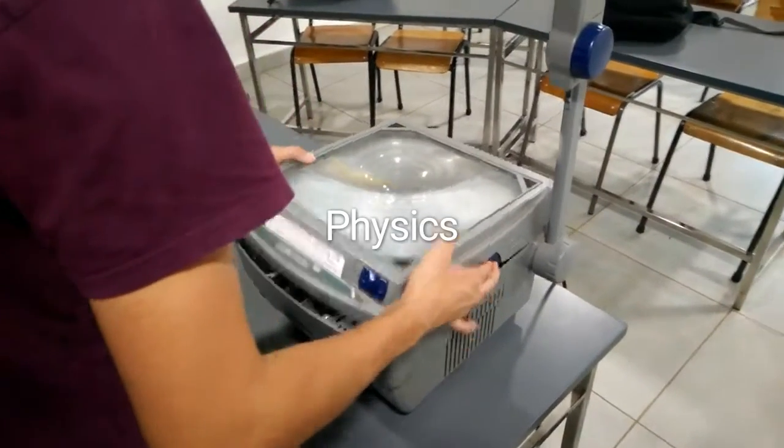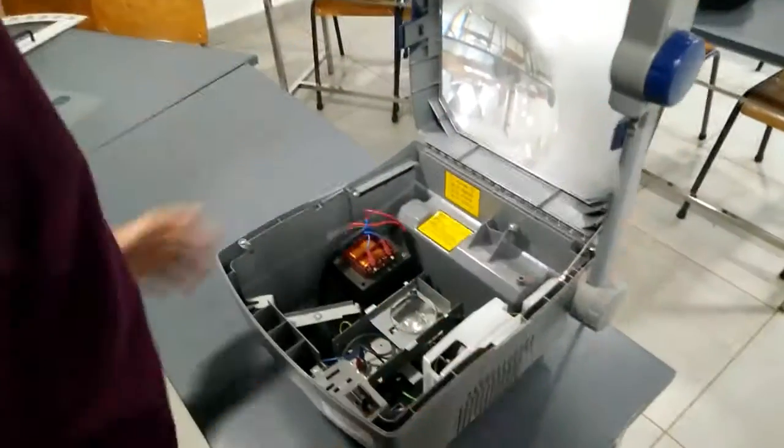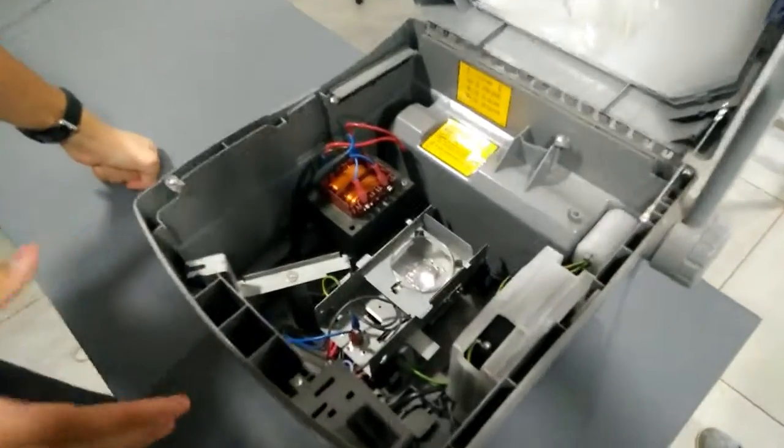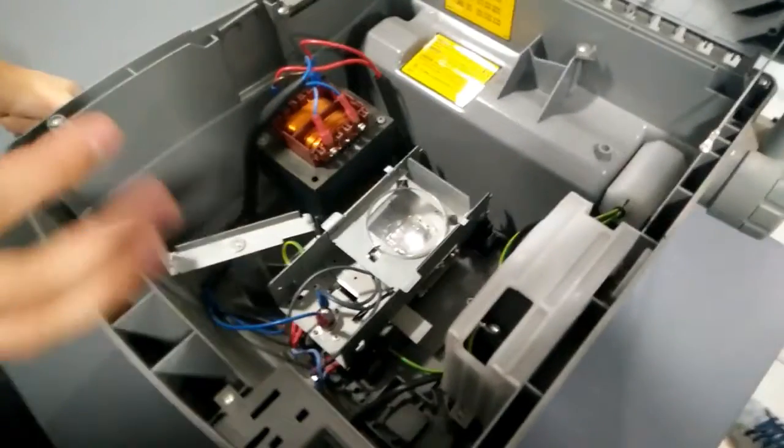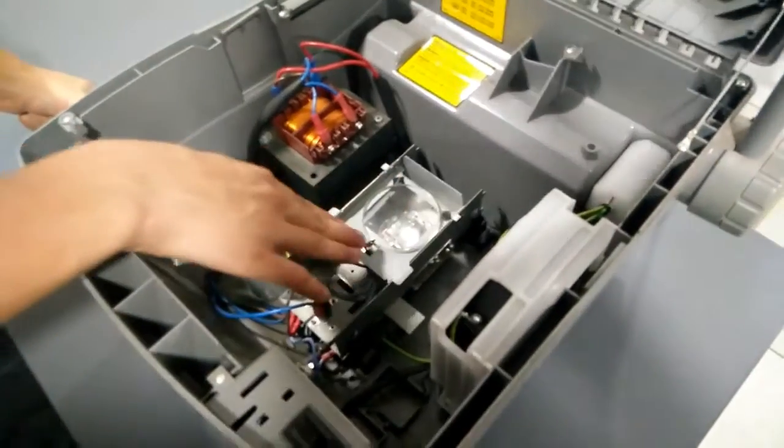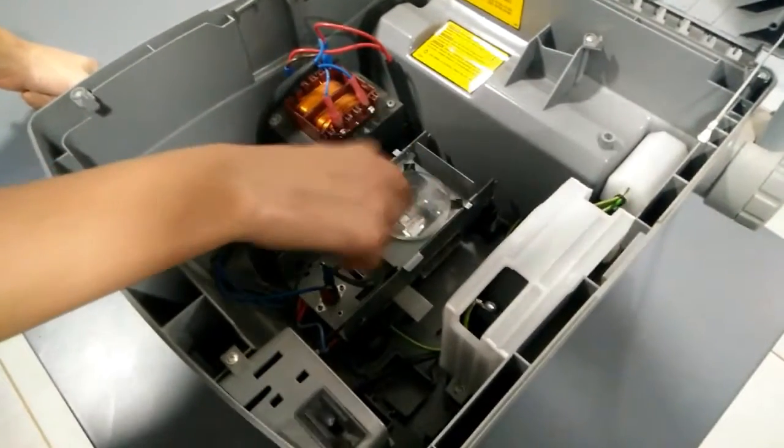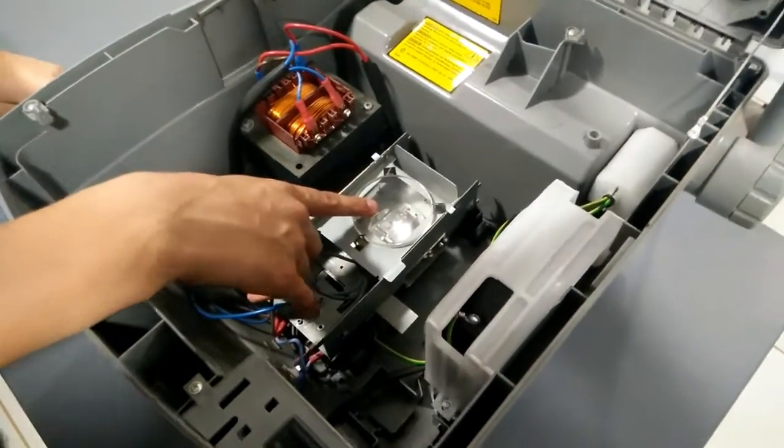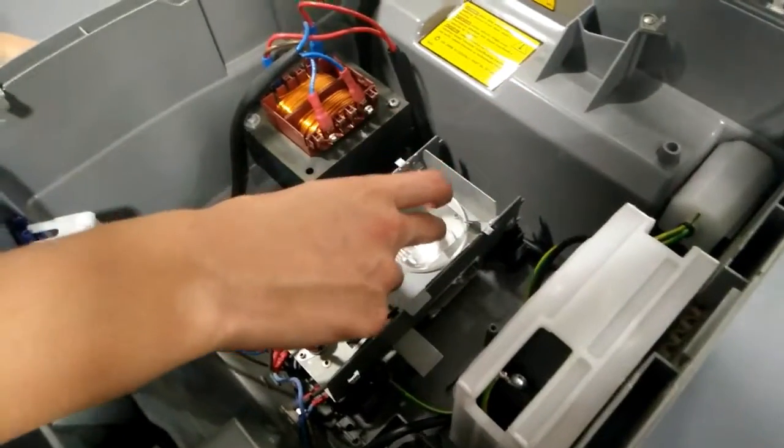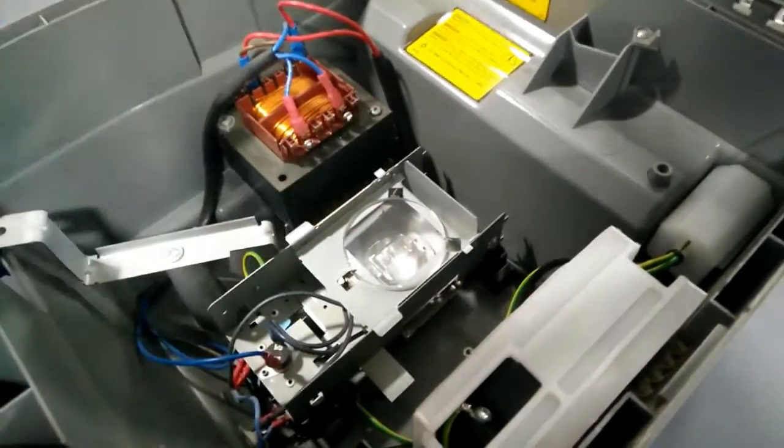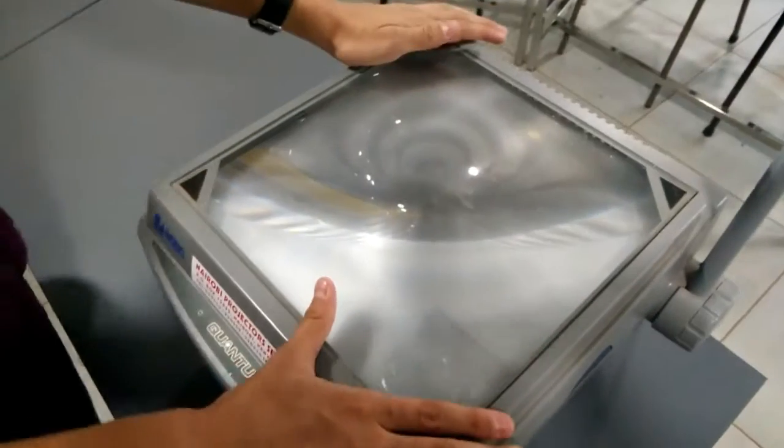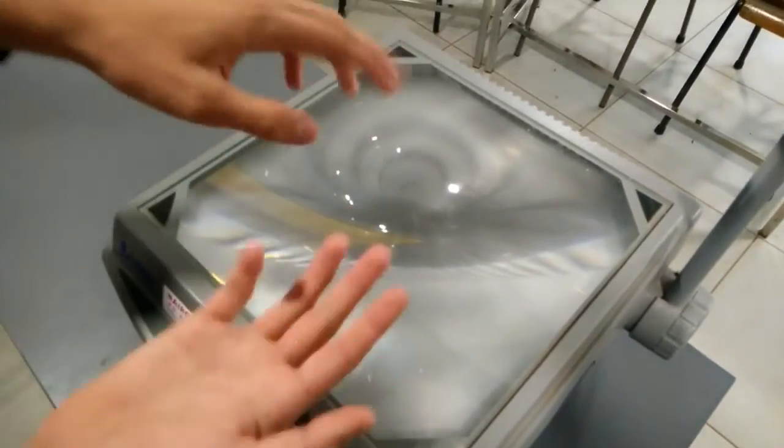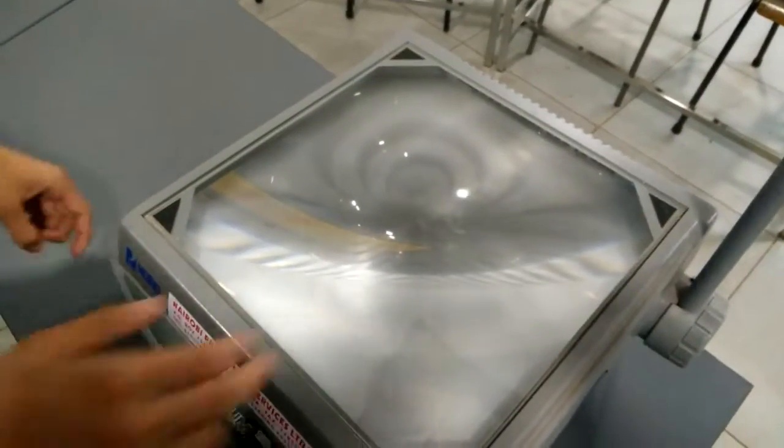For our physics project, we will be looking at this overhead projector. The main parts that affect the visual side that help the visual part function are this 250 watt light bulb, this converging lens right above it with a focal length of 25 centimeters, this large flat Fresnel lens that's kept between two glass plates.